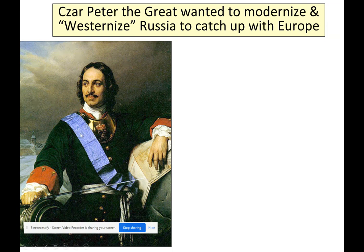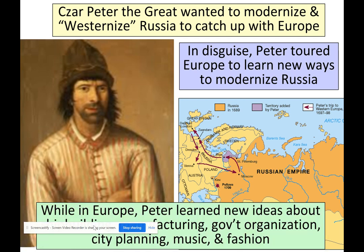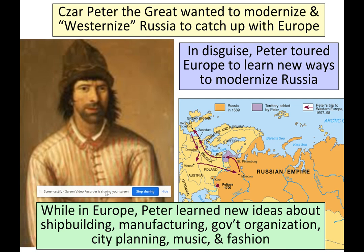Tsar Peter the Great wanted to modernize and westernize Russia — adopting the political, economic, and trade aspects of Europe. Russia sits half in Europe and half in Asia. In disguise, Peter toured Europe to learn new ways to modernize Russia. He learned new ideas about shipbuilding, manufacturing, government organization, city planning, music, and fashion — things Russia had never seen before.